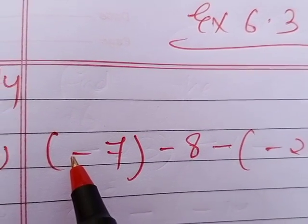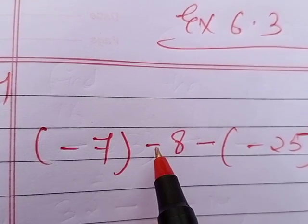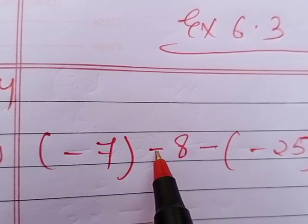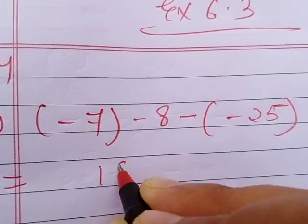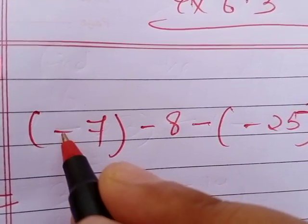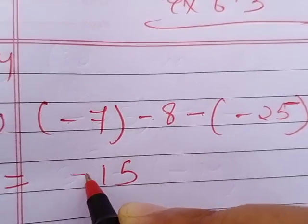See, this is -7 - 8. We know that minus minus is plus, so we will add 7 and 8. We'll get here 15, right? And here also minus, here also minus sign, we'll put minus.